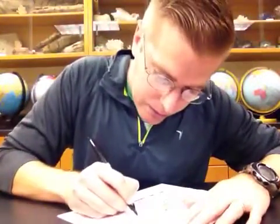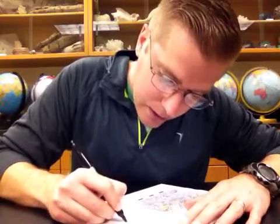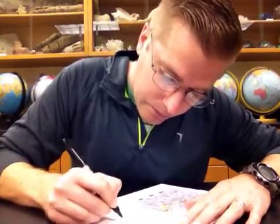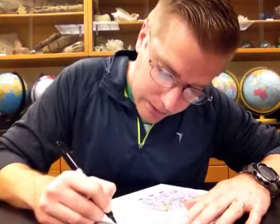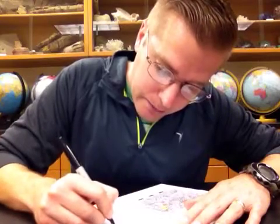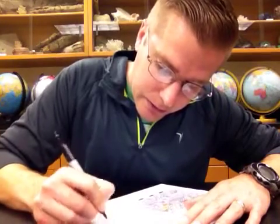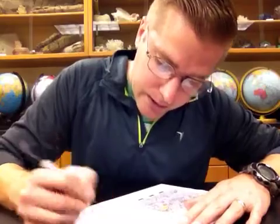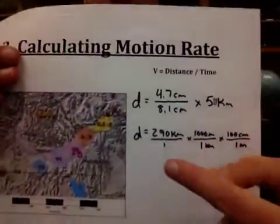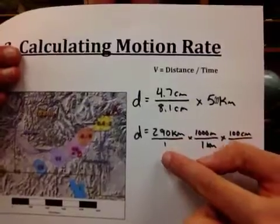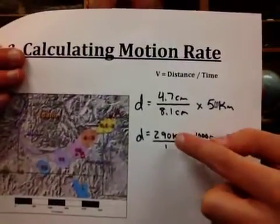Let's go ahead and set up the stoichiometry. We need to convert from kilometers to meters. So we set up the next fraction. And then from meters, we're going to need to convert to centimeters. So we take our 290 kilometers, put it over 1.